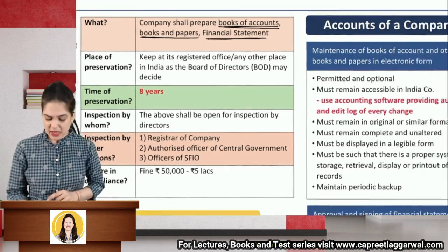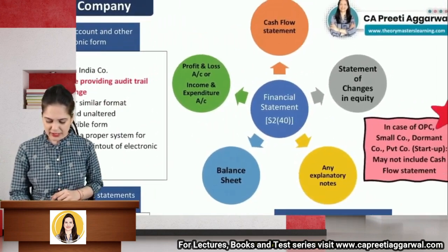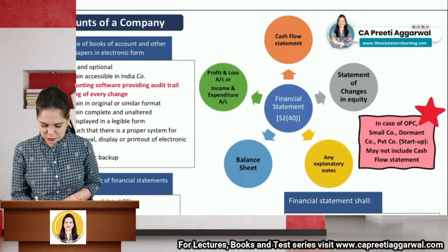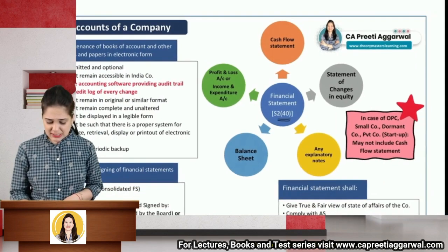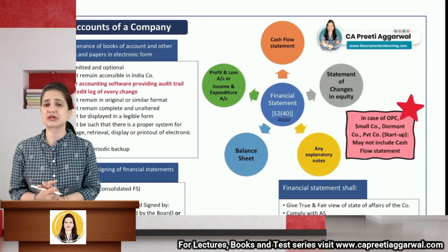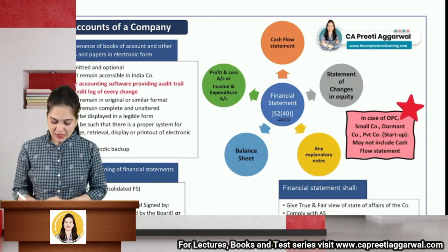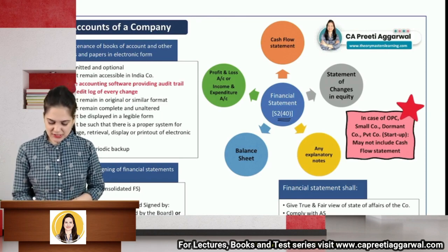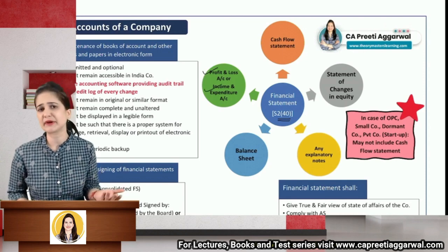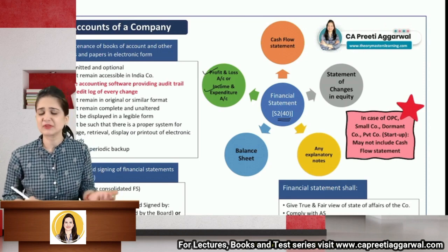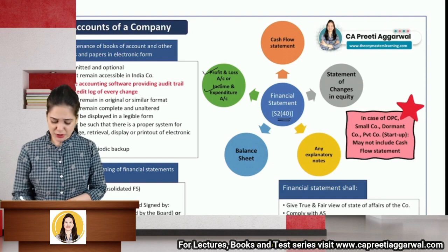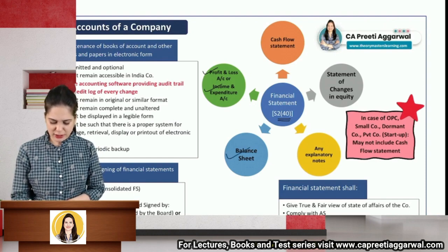Let us understand what is included in a financial statement. Financial statement is discussed under Section 2, Clause 40 — this is important from the definition point of view, as a two-mark question may ask you to define it. Financial statement includes profit and loss account or income and expenditure account as the case may be, depending on whether the company is a profit or non-profit organization. It also includes balance sheet and cash flow statement.